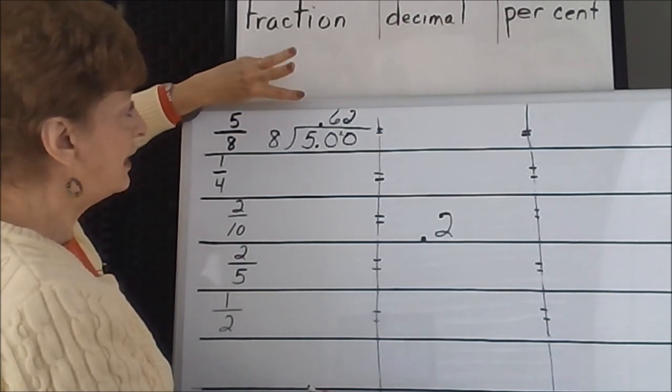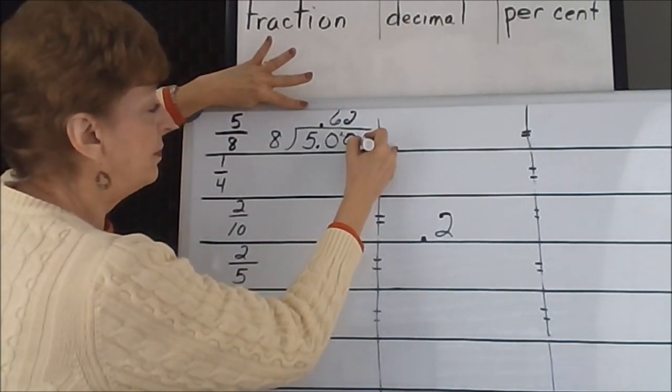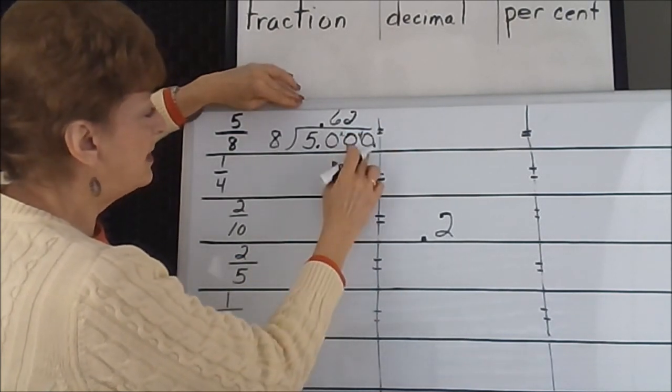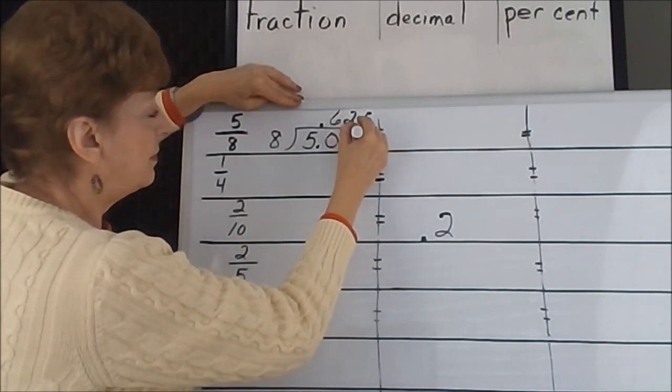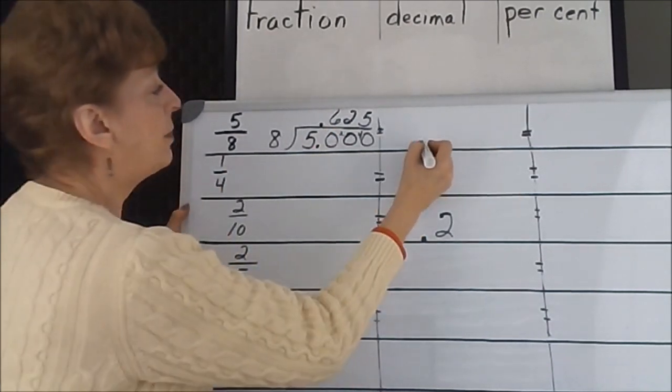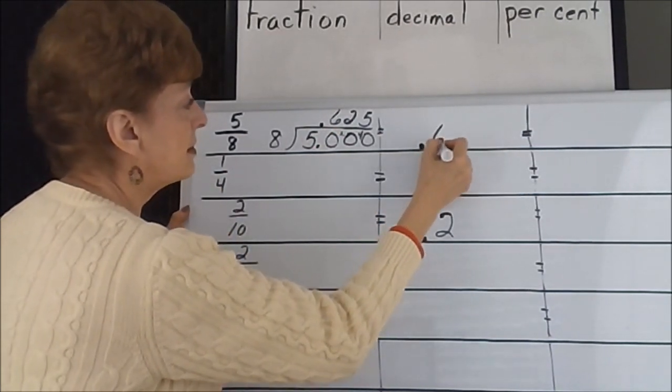16, 17, 18, 19, 20. I'm going to add another 0 to it to accept my 4. 8 divides into 40 five times. That works out evenly. This is the decimal number, 0.625.